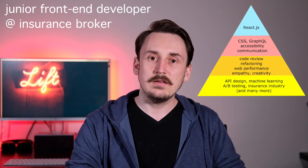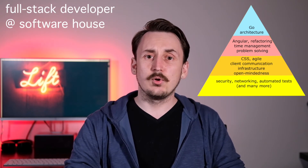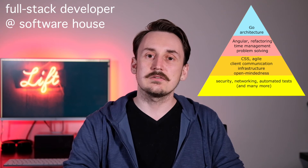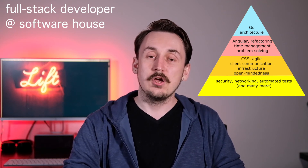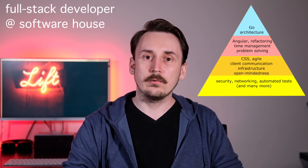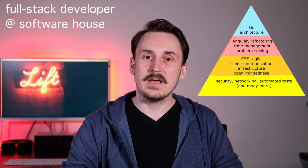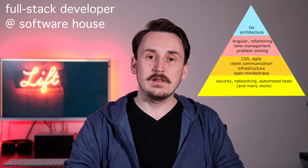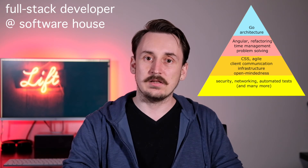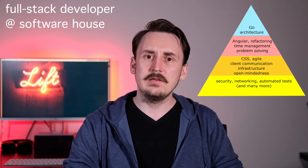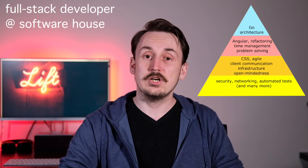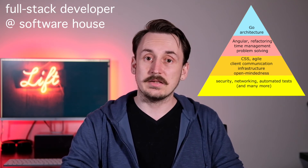The second example is a full-stack developer working at a software house. In this case, I put two technical skills on top of my pyramid: Go programming language, which I'm using currently at work and am very passionate about; and software architecture, because at some point I would like to be a technical lead helping to design different applications for clients. On the third level, I put Angular framework, which is commonly used in my company and which I need to understand as a full-stack developer; refactoring, because it is very important for writing maintainable code; and time management and problem solving, which are not directly related to programming but are skills I consider important.